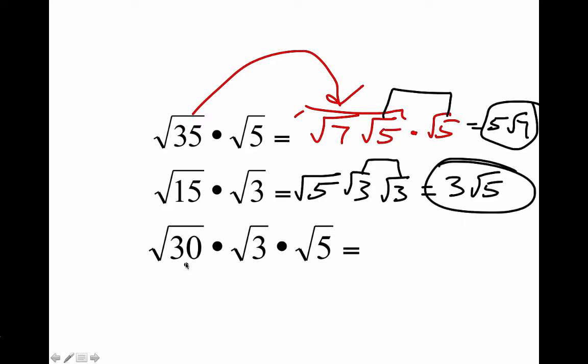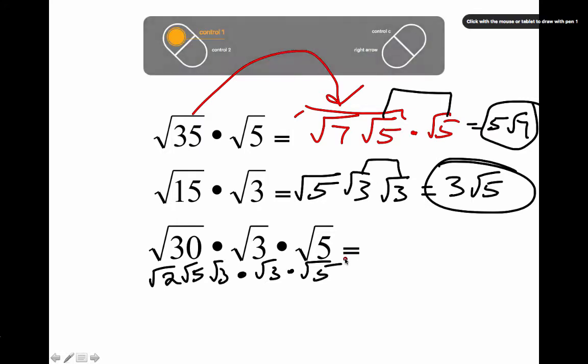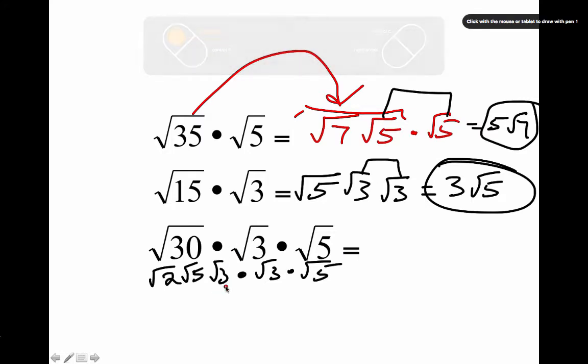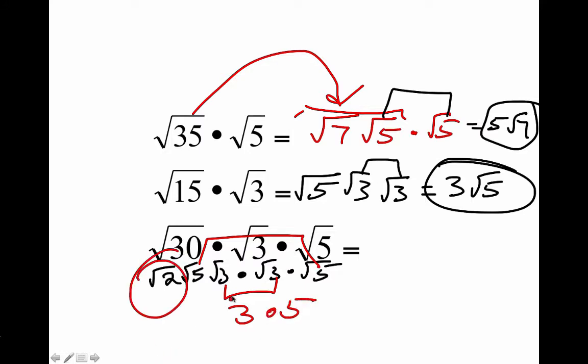Down here, I got a 3 and a 5, so I would do 2, 5, and 3. That's 30 times the square root of 3 times the square root of 5. Now watch what happens. I've got 3 times the square root of 5, that's 5, and this is left. So I get 15 root of 2.